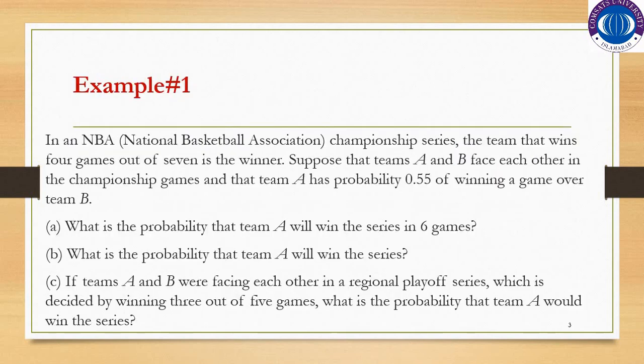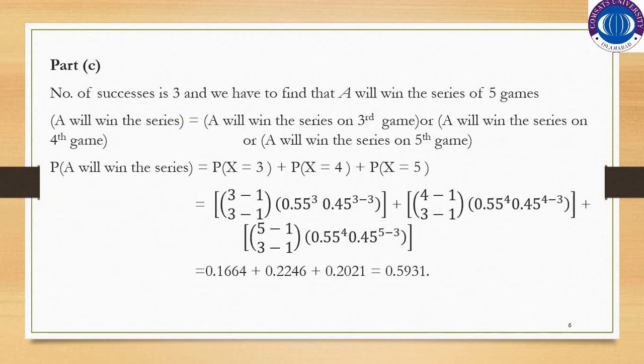Part C: If Teams A and B face each other in a regional playoff series decided by winning 3 out of 5 games, what is the probability that Team A would win the series? The situation has changed — the winner is now declared by winning 3 games out of 5 games.